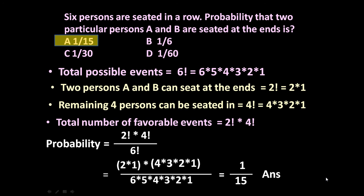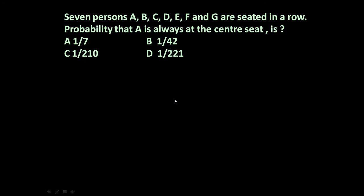Let us solve one more problem of a similar type. Here the problem is: 7 persons A, B, C, D, E, F and G are seated in a row. The probability that A is always at the center seat is — 7 persons are there, and we want A to always be at the center. What will be the probability?